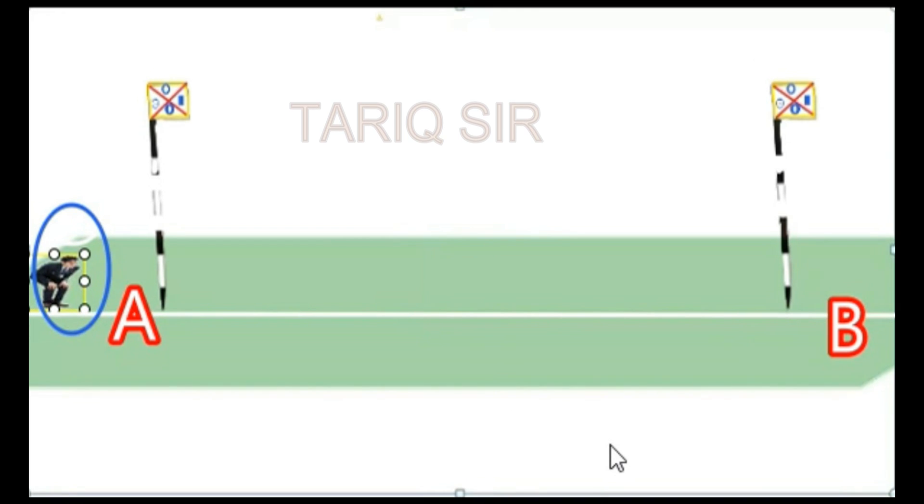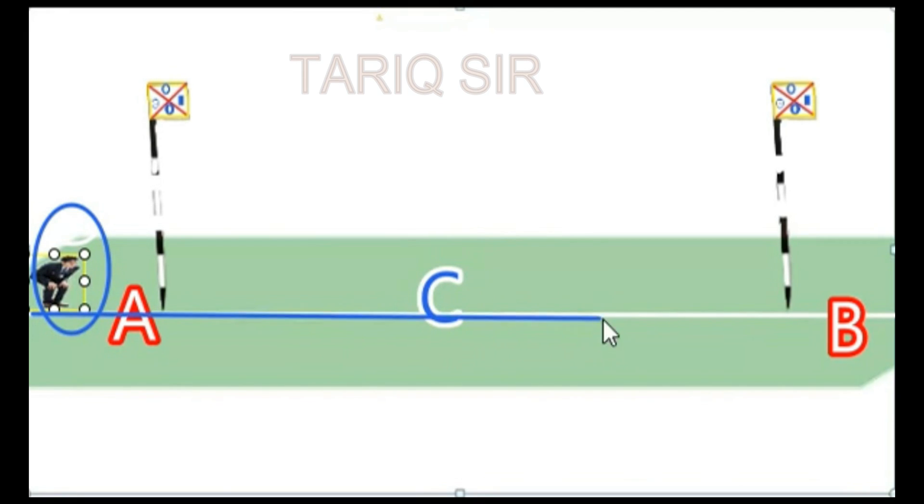Now what we need over here is a third ranging rod. Without this third ranging rod, our chaining is not going to be complete. You can keep this ranging rod in any location in such a way that this line is absolutely straight. So this is our ranging line and this has to be absolutely straight so that our ranging is complete.